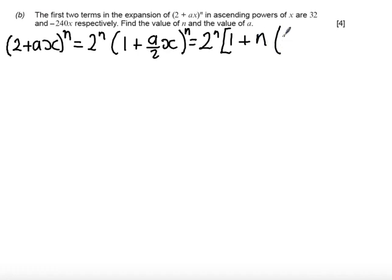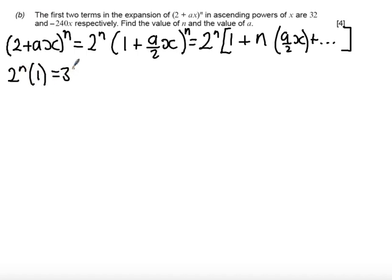Expanding gives 2^n times (1 + n times (a/2)x + ...). So my first term is 2^n times 1, and that equals 32. Since 2^n times 1 is just 2^n, and 2 to the 5 equals 32, then n must equal 5.